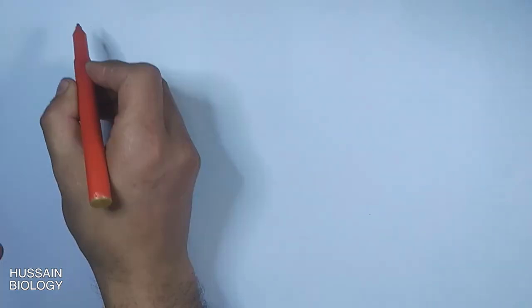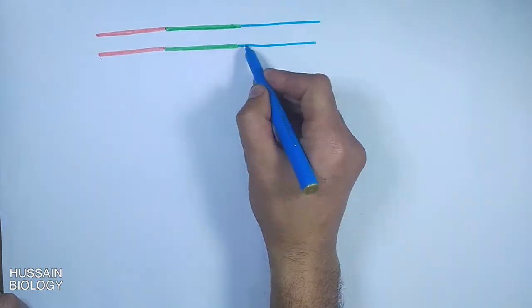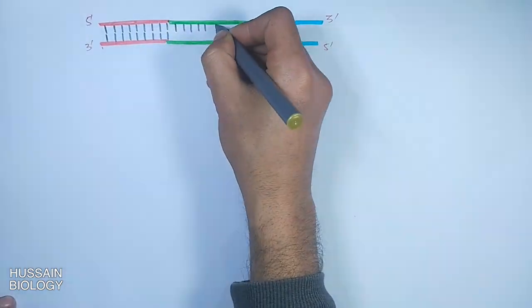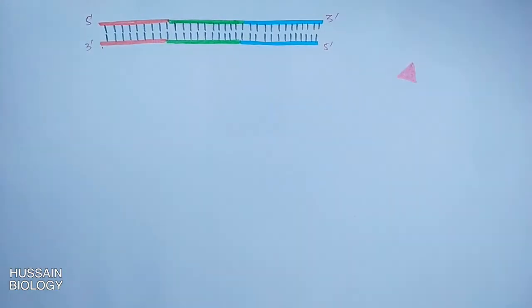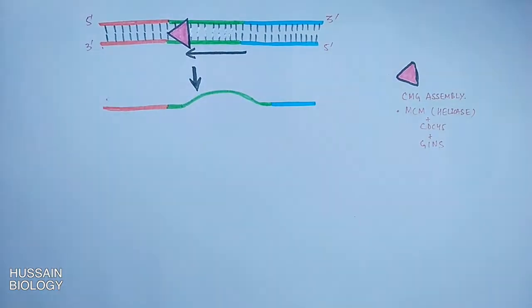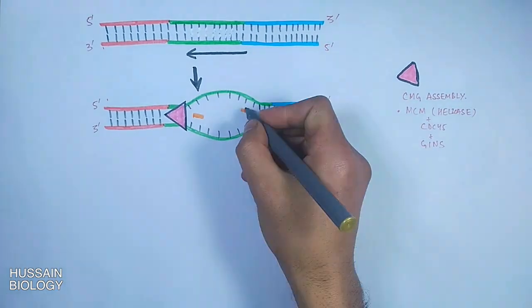In order to understand how these Okazaki fragments are made, let's have a look at this diagram. This is the color diagram so that we can understand it in a better way. You can see first the helicase opens up the strands, then the primers are added to both the strands as shown in the orange color.